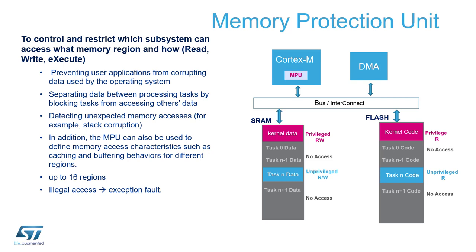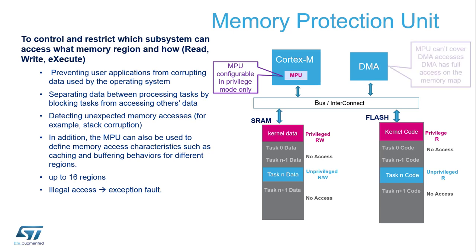The MPU can also detect unexpected memory access, for example stack corruption. In addition, MPU can be used to define memory access characteristics such as caching and buffering behavior for different regions. You can configure up to 16 regions depending on the core, and any illegal access will trigger an exception. Configuration of the MPU must be done only in privileged mode.